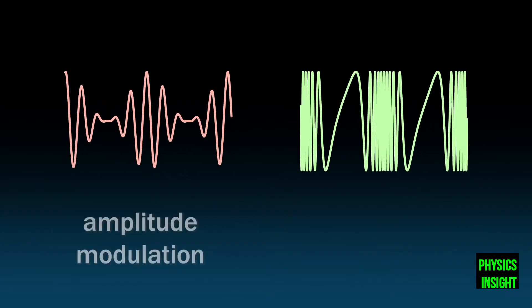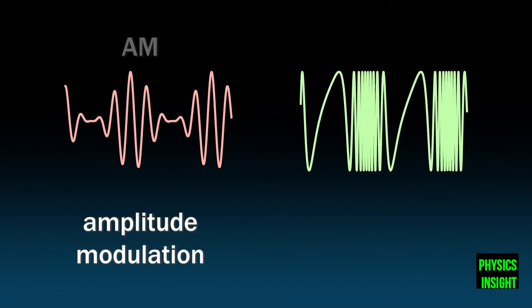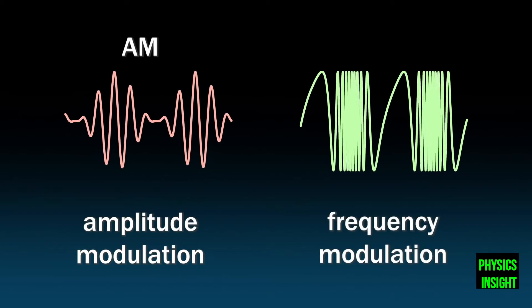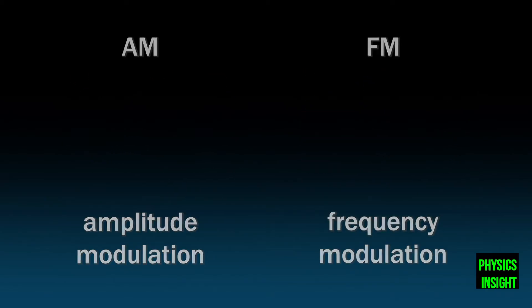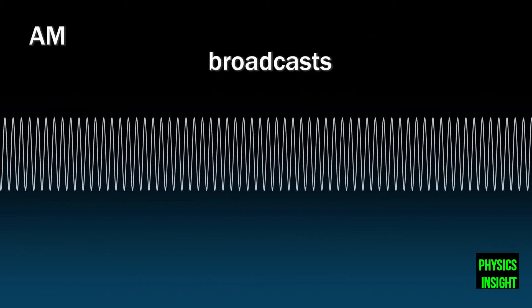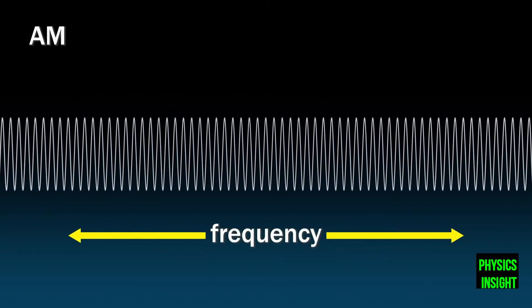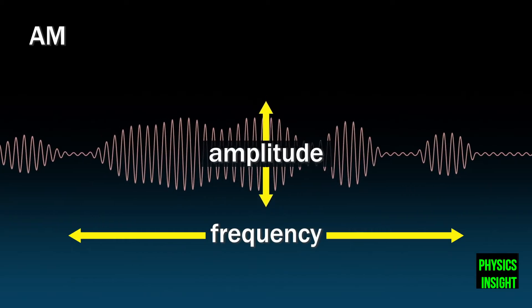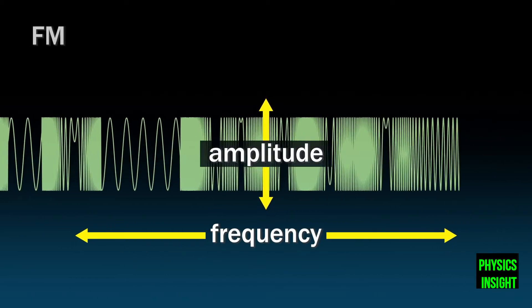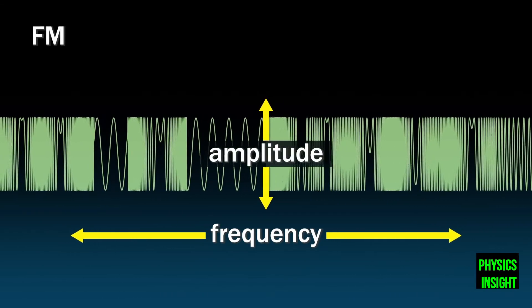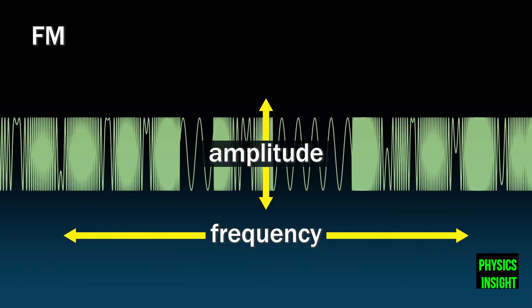Amplitude modulation, or AM, and frequency modulation, or FM. AM radio broadcasts a carrier wave that maintains a constant frequency while the overlaying sound wave modulates its amplitude. FM radio maintains a constant amplitude while the frequency varies based on the overlaid signal.